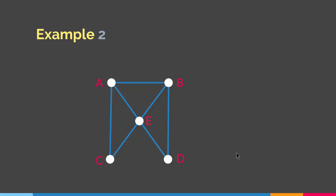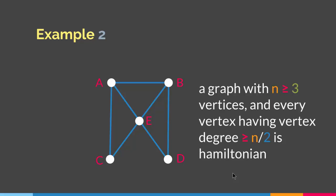Let me give you another example. In this example we have 5 vertices. Vertex A and vertex B have degree 3, vertex E has degree 4, and vertex C and vertex D both have degree 2. Even though the condition of Dirac's theorem does not apply on this graph, it still has a Hamiltonian circuit. We can start from B, go to D, E, C, A, and then end at B. Our path is a circuit, it hits every vertex exactly once, and starts and ends at the same vertex — so the graph is Hamiltonian even though Dirac's condition is not present.